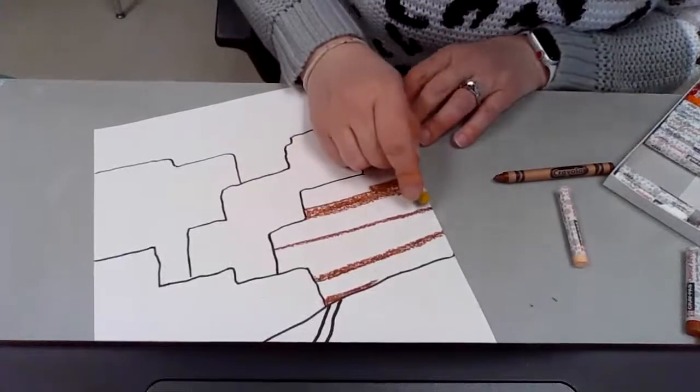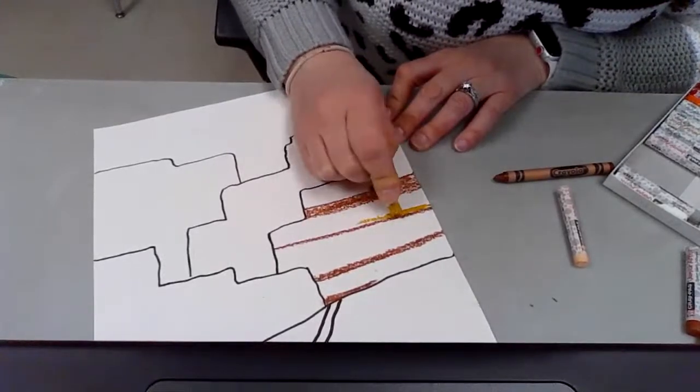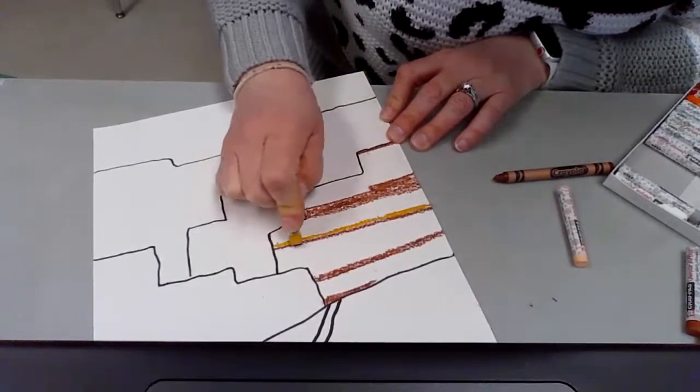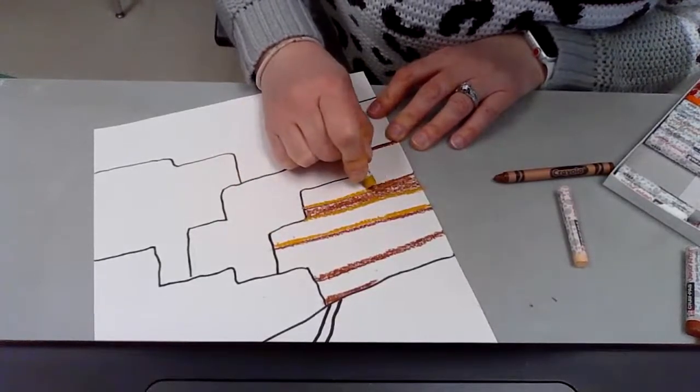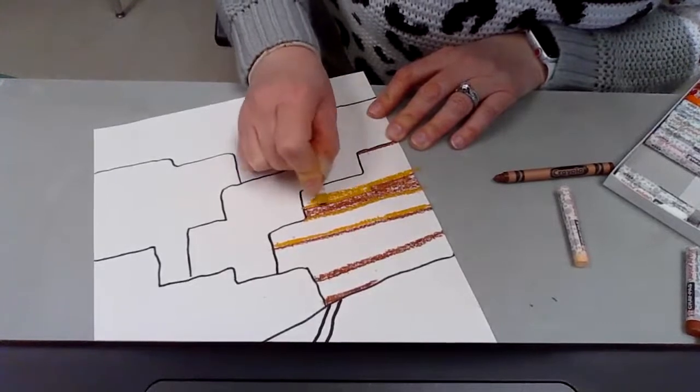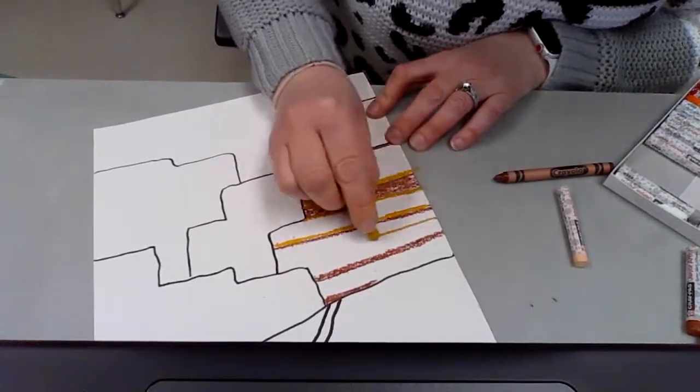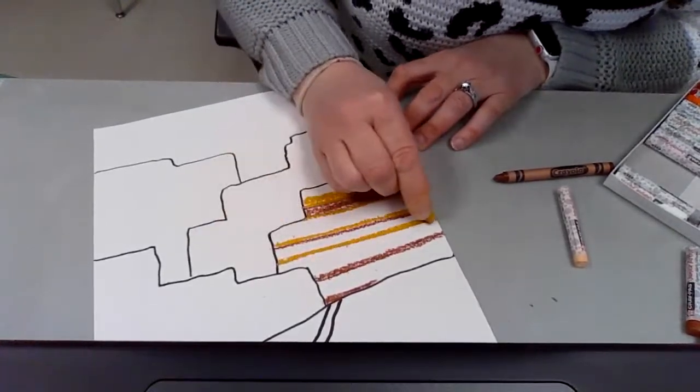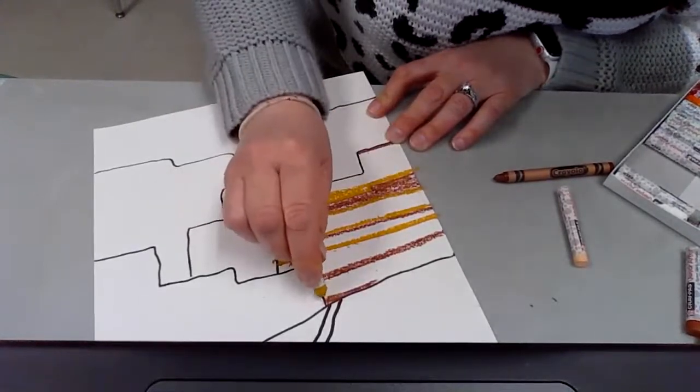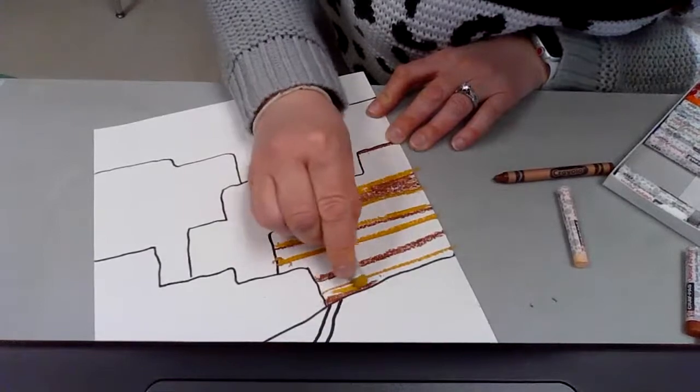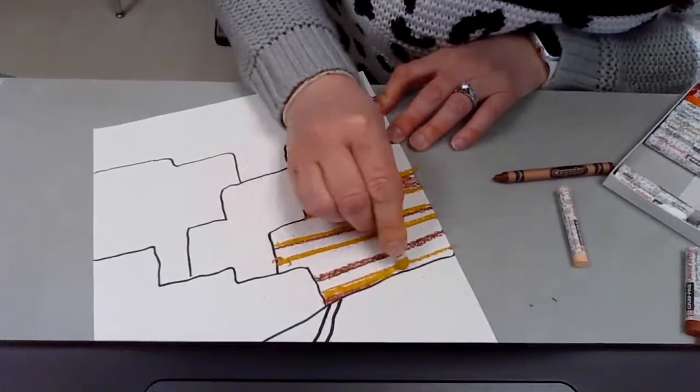Once I finish with that color, I'm going to move in there with another color. And I'm going to make sure that again, I do some different thicknesses of that color. You can be pretty random about it. You really don't want to have a perfect pattern by any means.